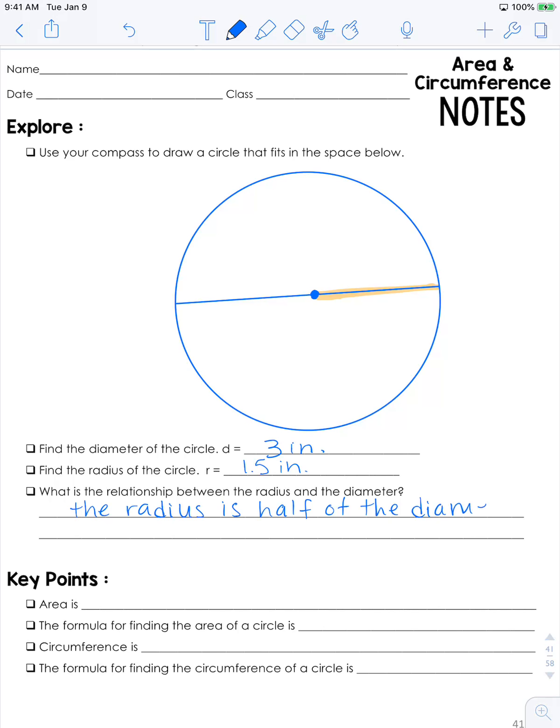Now your circle may be larger or smaller than mine and that's completely okay. It doesn't have to have the same measurements. So here's the key points. You already know area when it comes to quadrilaterals and triangles, so you know the definition is the number of square units in a shape.